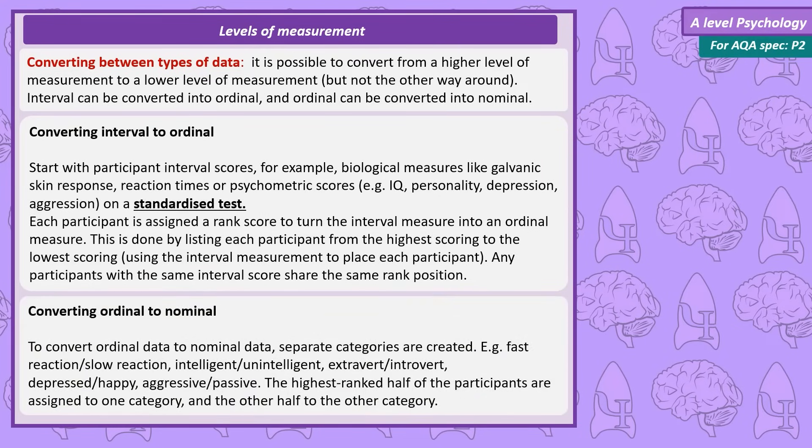Secondly let's talk about converting from ordinal to nominal. To convert ordinal to nominal we'll need to create separate categories. So fast reaction, slow reaction, unintelligent, intelligent, extrovert, introvert, depressed, happy, aggressive, passive. What we can then do is place the highest rank half of our participants into one category and the other half into the other category.